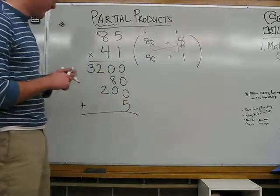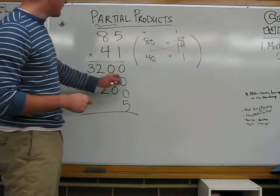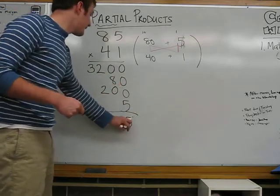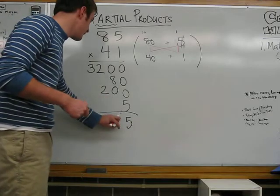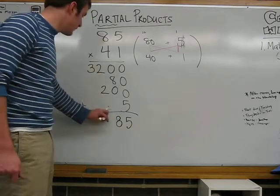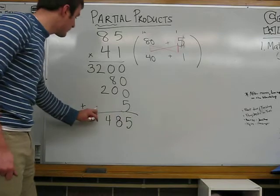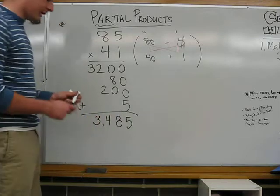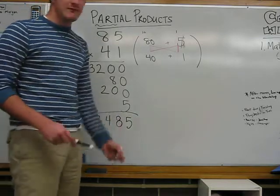Let's add them together. 0 plus 0 plus 0 plus 5 is 5. 0 plus 8 plus 0 is 8. 2 plus 2 is 4. And, 3 comes straight down. It gives us our answer of 3,485.